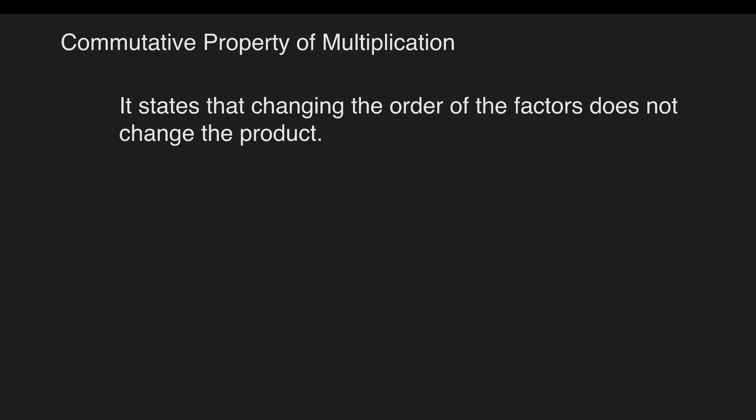The first one is the commutative property of multiplication. It states that changing the order of the factors does not change the product. For the examples, we have 2 times 3. What is the answer? 2 groups of 3 is equal to 6. As well as,